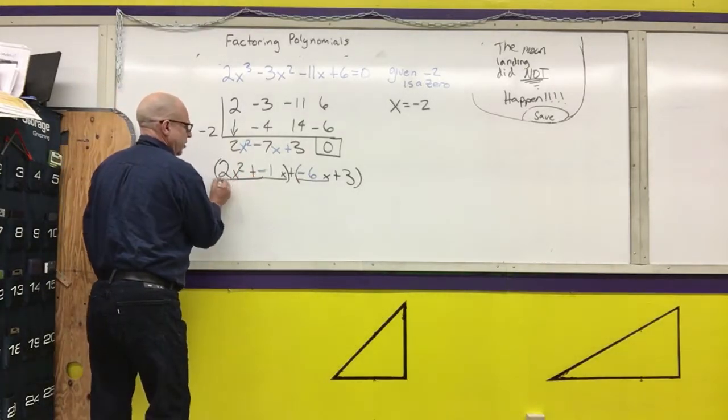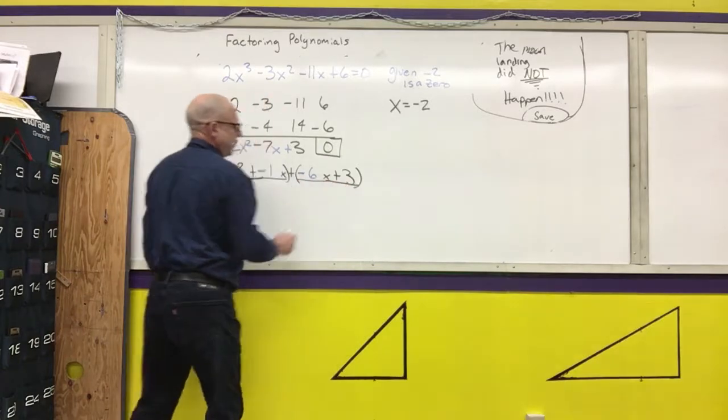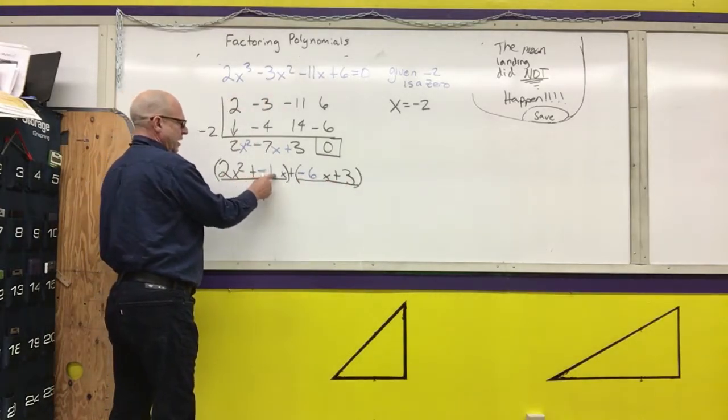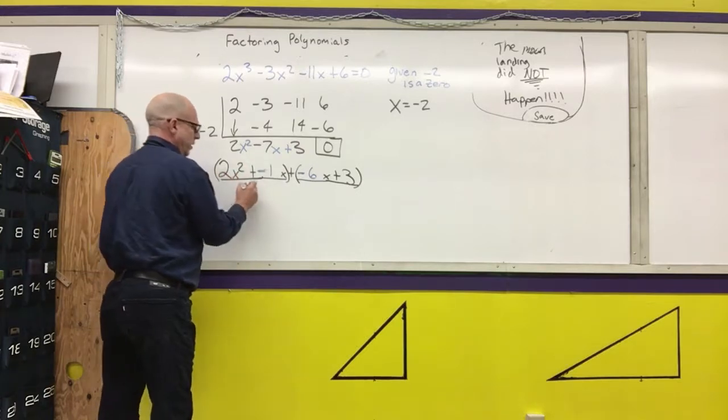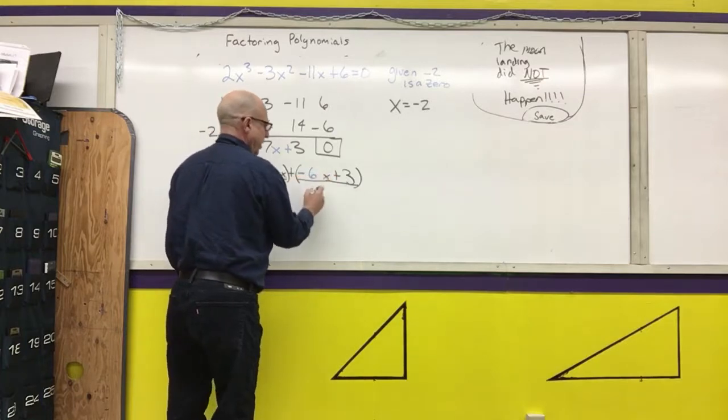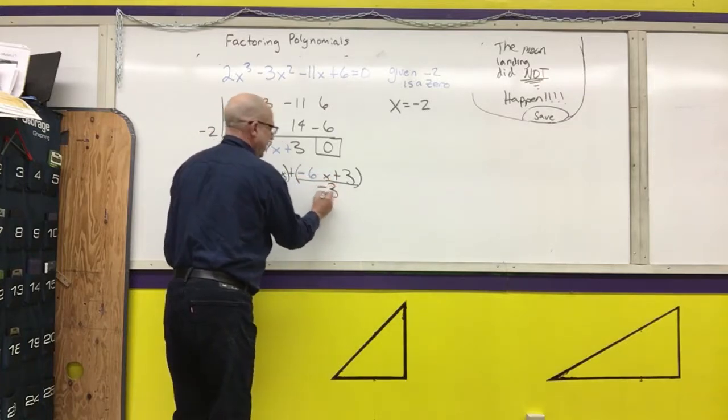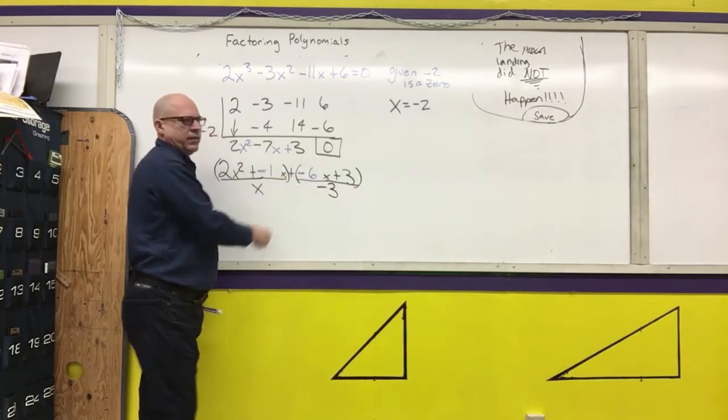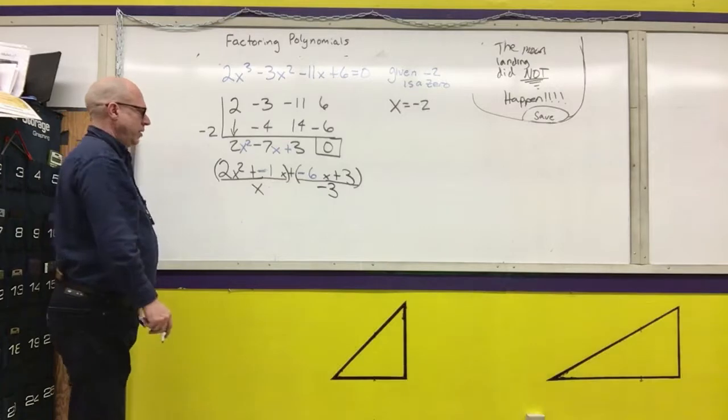Next thing I want to do is find the greatest common factor of each group of terms. Greatest common factor between negative 1x and 2x squared is x. Greatest common factor between negative 6x and 3 is negative 3. One thing I want to point out, in the second term, if this number is negative, you always are going to factor out the negative term there.